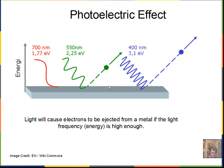Einstein explained the photoelectric effect in 1905 in one of his papers, and this explanation led to his Nobel Prize. The key observation: the wavelength of light must be short enough — blue enough — to get any electrons coming off the metal. Increase brightness at a short enough wavelength and you get more electrons, which agrees with classical physics. But classical physics wrongly predicts that you could just wait long enough with red light for the electron to pick up enough energy. That is false — red light will not cause electrons to leave the metal.